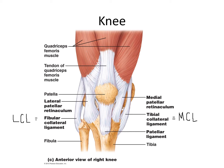Then we have our fibular collateral ligament connecting the femur to the fibula — another term for that is LCL, lateral collateral ligament. The fibula is towards the outside of the body, the lateral bone of the leg. On the other side, we have the tibial collateral ligament spanning from the tibia to the femur, often abbreviated MCL for medial collateral ligament, because the tibia is the medial bone of the leg. Usually in a clinical setting, MCL and LCL are more common.